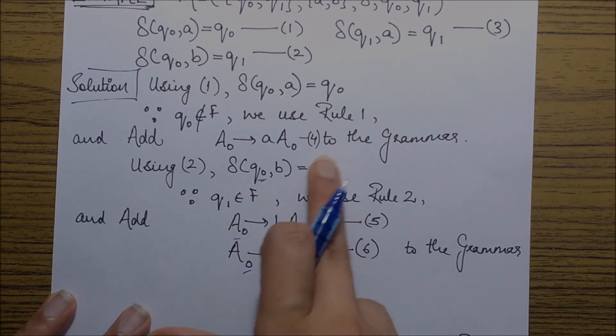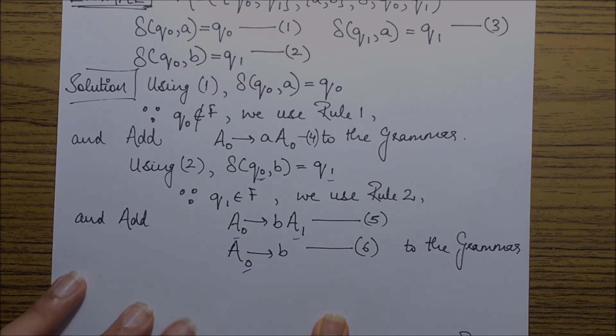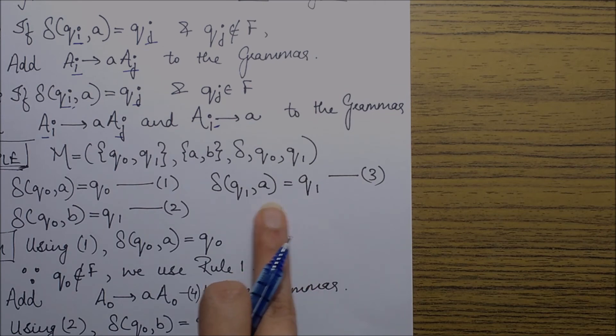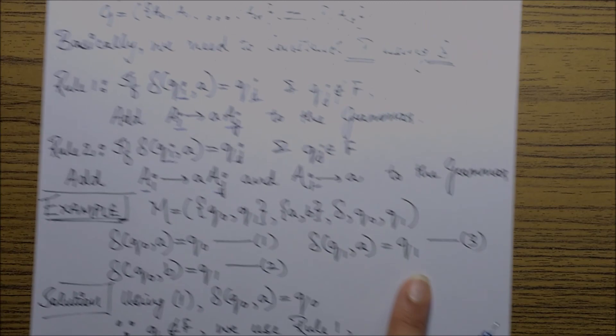Finally we are left with only one transition which is delta q1 a goes to q1. Again q1 is a final state and hence the rule to be used is rule 2 for our final state.